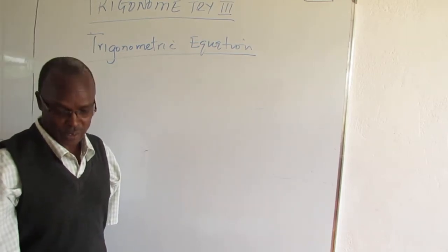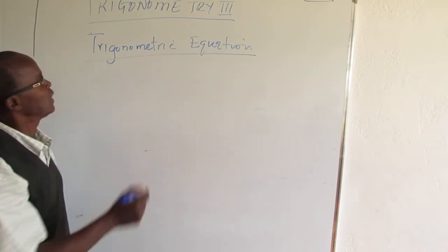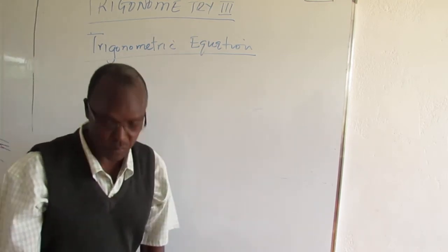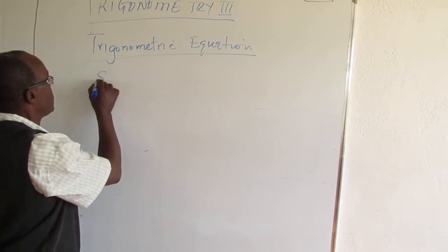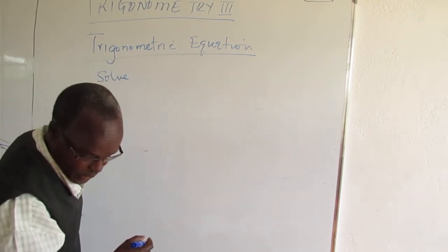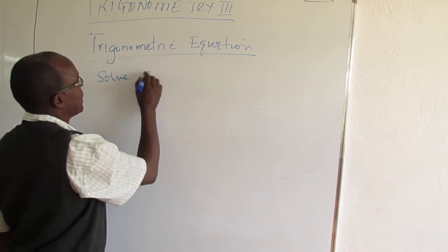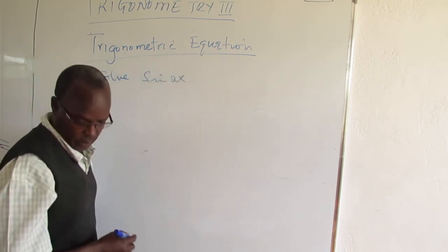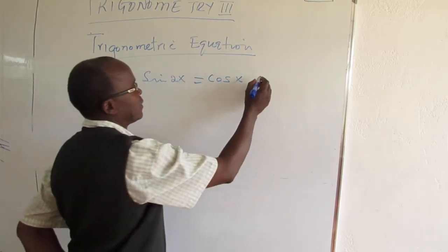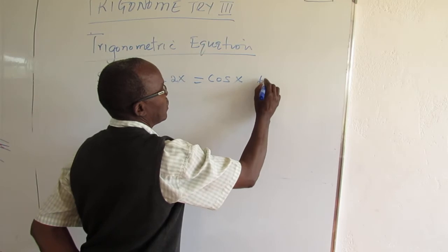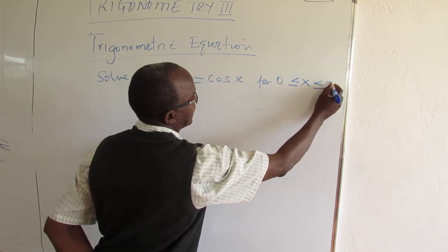So today we want to continue from where we stopped and see how we can solve a few trigonometric equations. For example, solve sin 2x equals cos x, and the answer should be for 0 is less than x is less than 360 degrees.